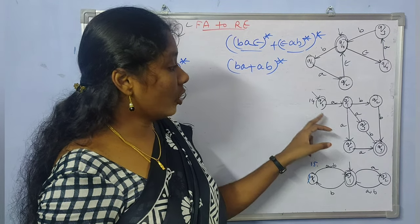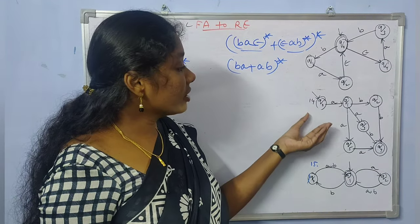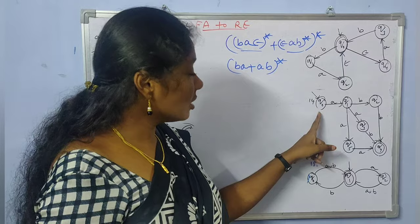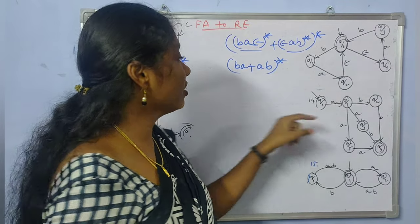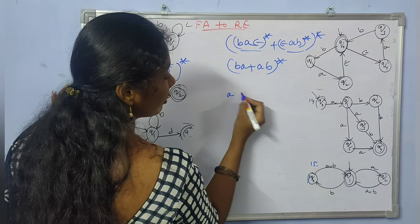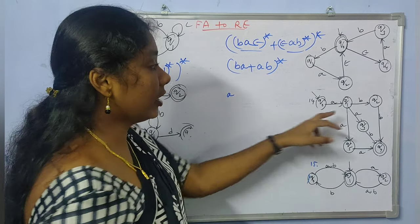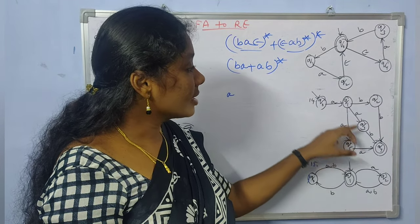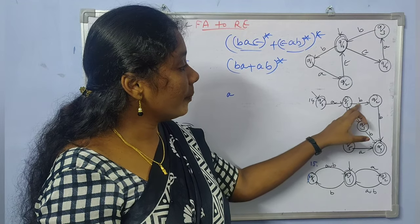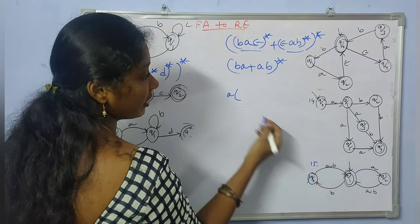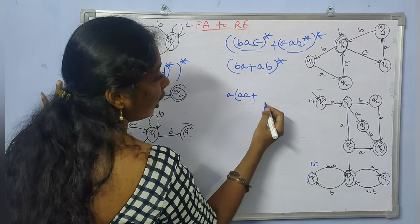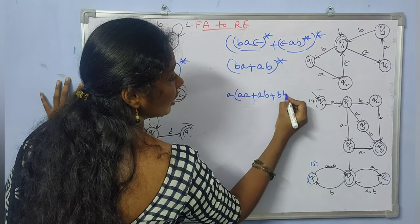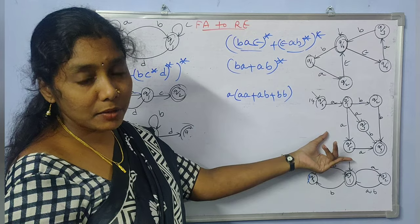Consider the next example: the initial state is Q0 and the final state is Q4. From Q0 you must first take 'a' — it is compulsory. From Q1 there are three ways to reach Q4: either go via 'a, d, a, a', or via 'a, b', or via 'b, b'. The equivalent regular expression is a(aa + ab + bb).